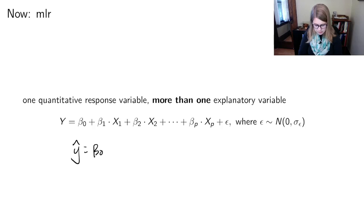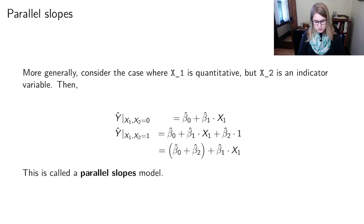Y hat equals beta 0 hat plus beta 1 hat x1 plus beta 2 hat x2 plus out to beta p hat xp. So as we're doing multiple regression, I'd like you to be thinking about the geometric shape of the models in space.